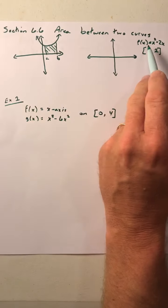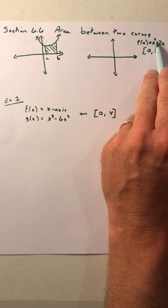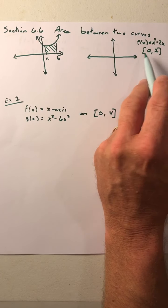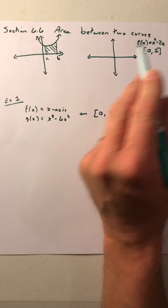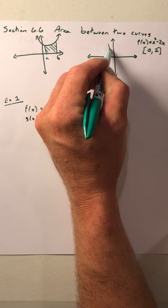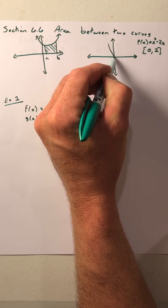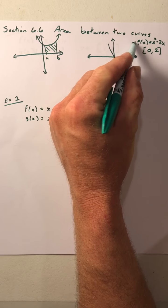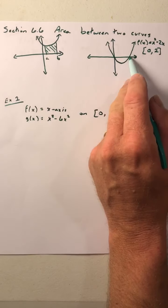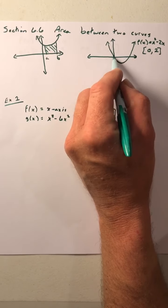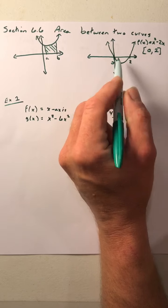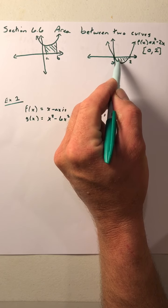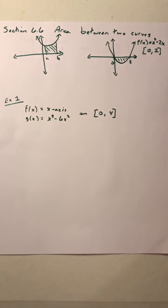So for example, if I give you f(x) = x² - 2x on the interval from 0 to 2, if I graph x² - 2x, we should know that it comes down through (0, 0) and comes back up through the point (2, 0). So we should see that this area is all below the x-axis.